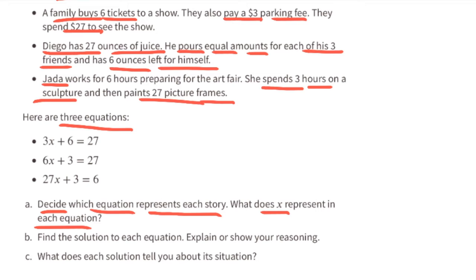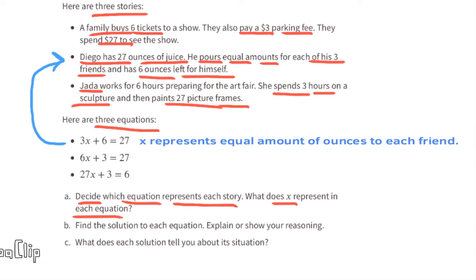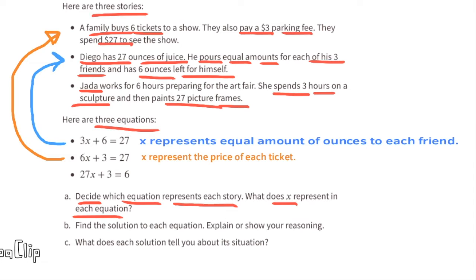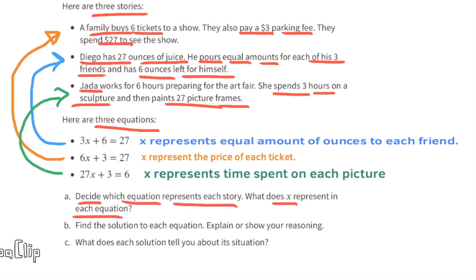Here are three equations. Decide which equation represents each story. 3x + 6 = 27 matches Diego's story; x represents the equal amount of ounces given to each friend. 6x + 3 = 27 matches the family buying six tickets story; x represents the price of each ticket, and the plus 3 represents the parking fee. 27x + 3 = 6 matches Jada's story; x represents the time spent on each picture frame, and the plus 3 represents the three hours on the sculpture.